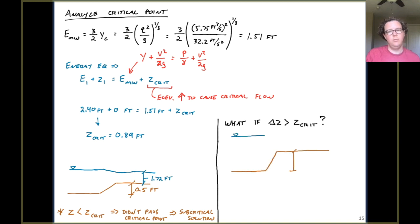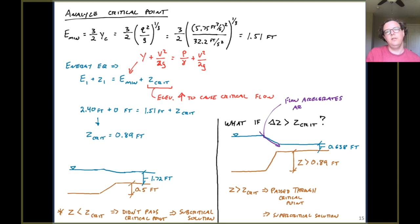Now, what if instead of 0.5, what if we had a raise in the stream bed that was 0.89 feet or more? So we were more than that critical depth or that critical bed elevation. If we were more than that critical bed elevation, what would happen is on the specific energy diagram, we would go around and pass through critical flow before we got back to the subcritical or supercritical solution. In other words, that depth on the right hand side would be the smaller value, the supercritical solution 0.638 feet. And what you would have done is you accelerated that flow sort of around the corner of the specific energy diagram.